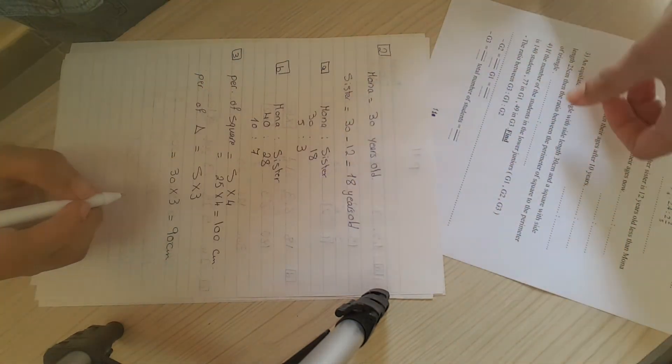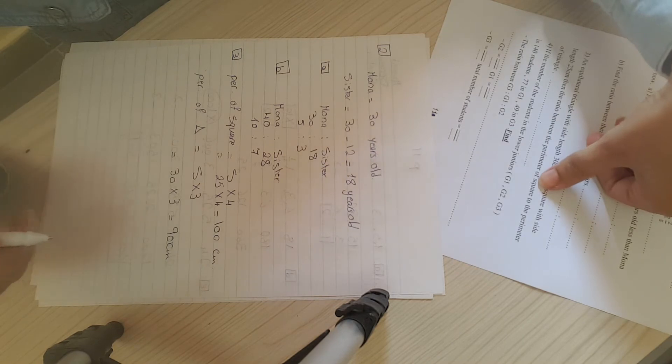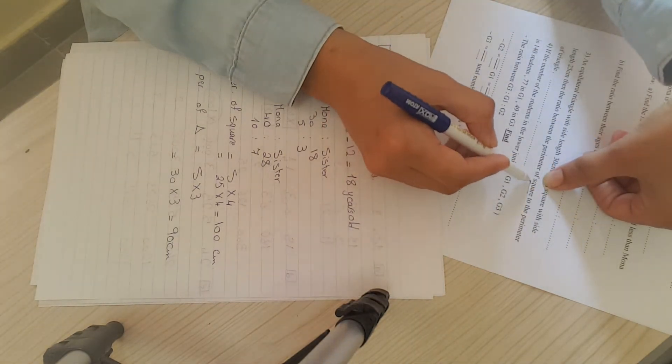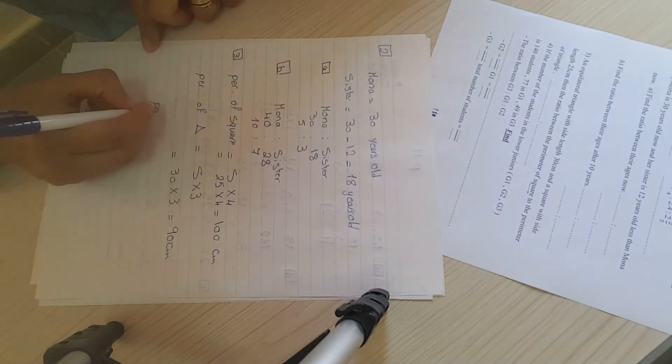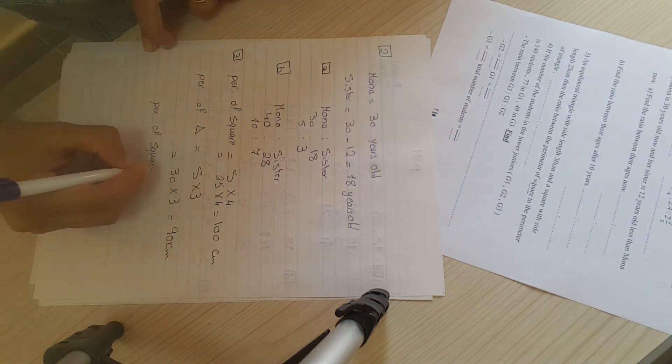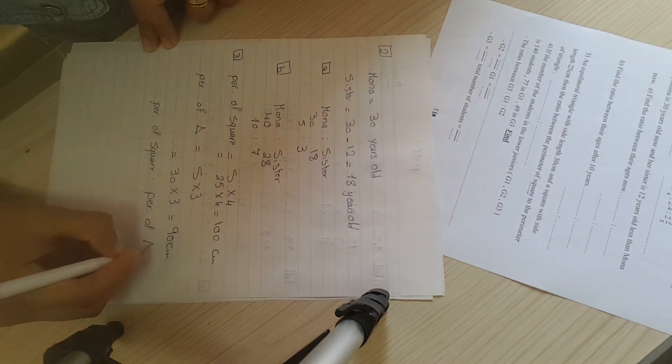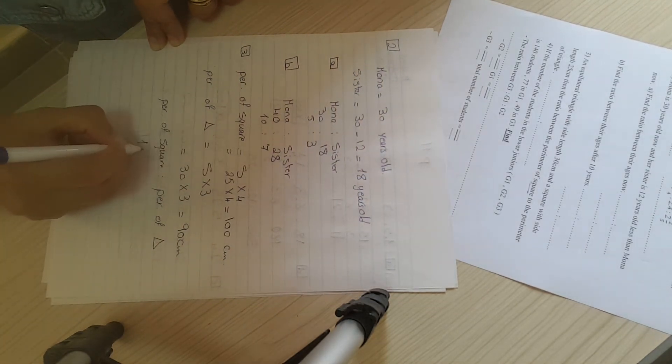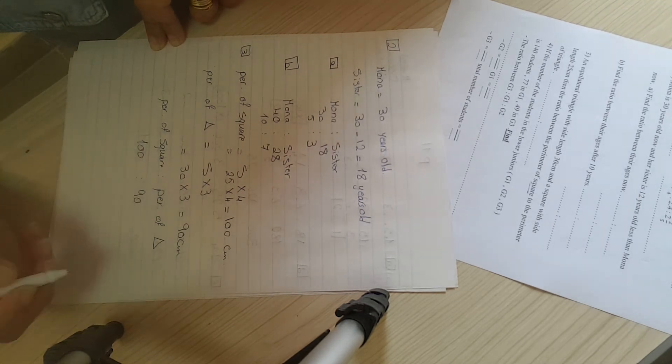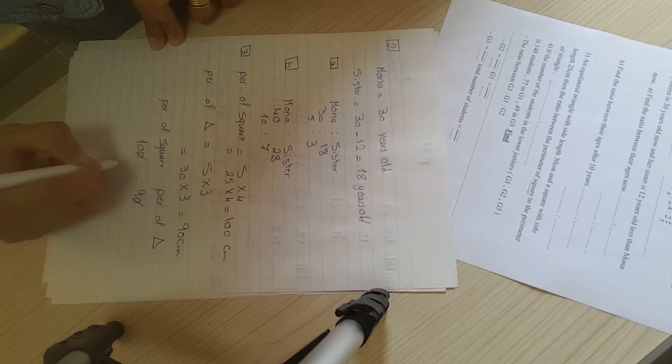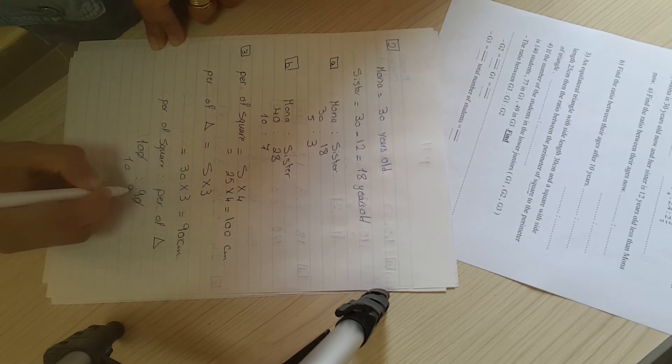I want to find the ratio between the perimeter of square first. The perimeter of square to the perimeter of triangle will be 100 to 90. Simplified, it will be 10 to 9.